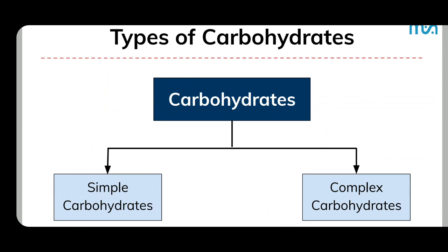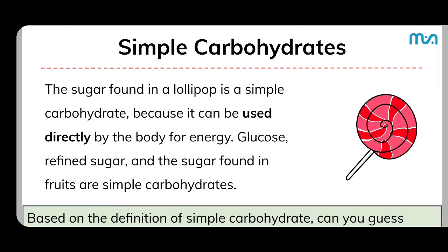Types of carbohydrates: there are two types — simple carbohydrates and complex carbohydrates. Simple carbohydrates: the sugar found in a lollipop is a simple carbohydrate because it can be used directly by the body for energy. Glucose, refined sugar, and the sugar found in fruits are simple carbohydrates.